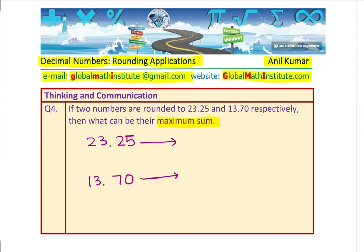So the number which could be rounded to 5 in the 100th place — if I write a number next to it which is 5 or more, it becomes 6. So the greatest number which can be rounded to this will be 23.254. And the number which can be rounded to 13.70 will be 13.704, because if I make that last digit 5, it becomes 7.1.